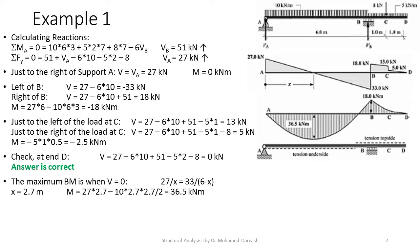To find the location of the maximum bending moment, we use the differential-integral relationship between bending moment and shear force. The bending moment is the integral of the shear force and the shear force is the derivative of the bending moment. Therefore, the maximum bending moment occurs when V equals zero — this is a concept you must know by heart.